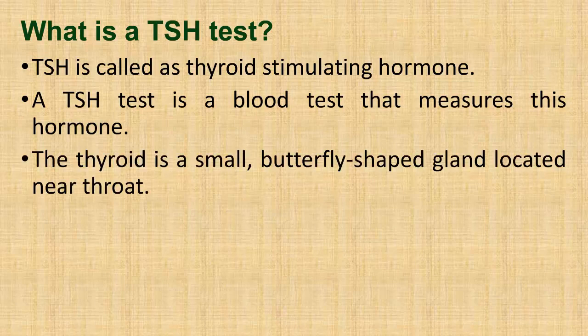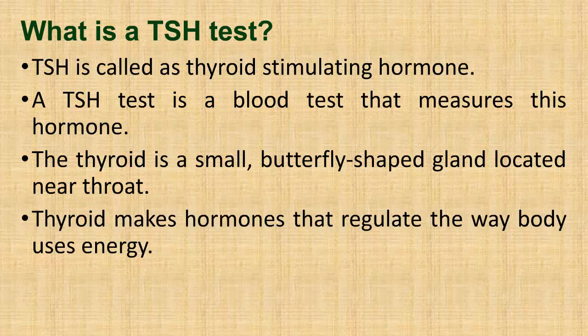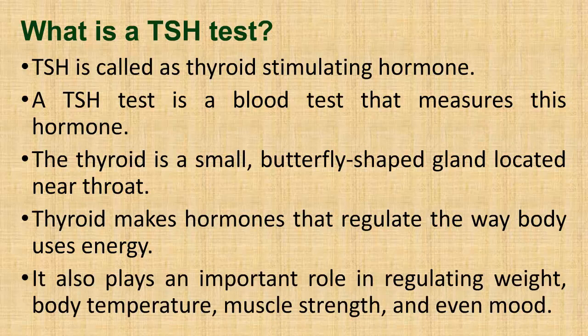The thyroid is a small, butterfly-shaped gland located near the throat. Thyroid makes hormones that regulate the way the body uses energy. It also plays an important role in regulating weight, body temperature, muscle strength, and even mood.